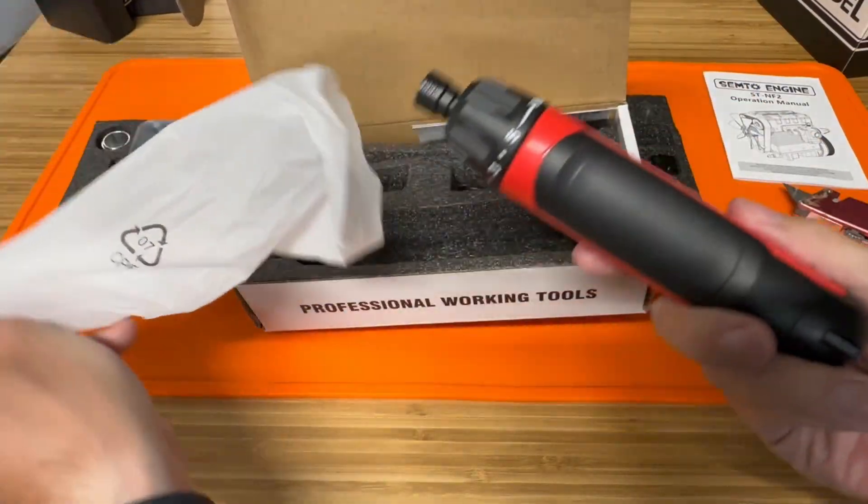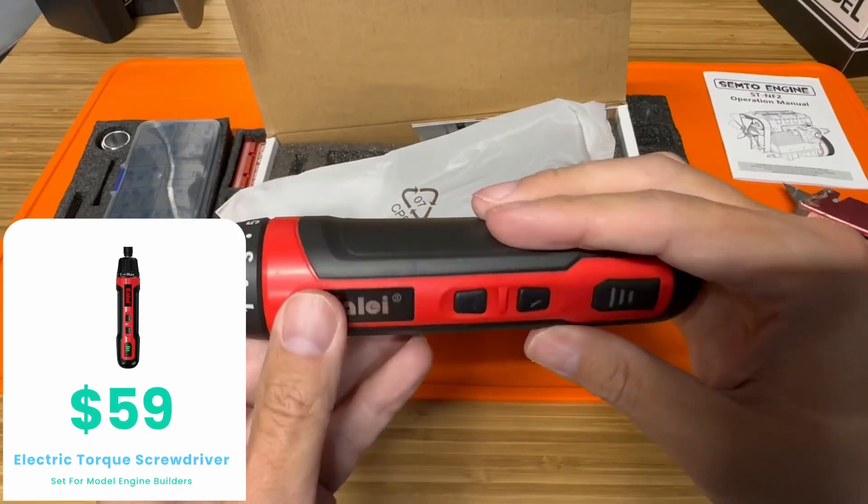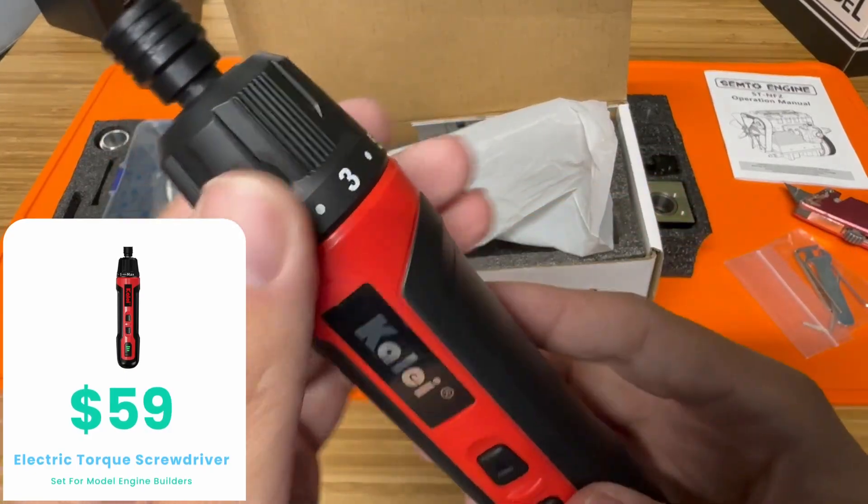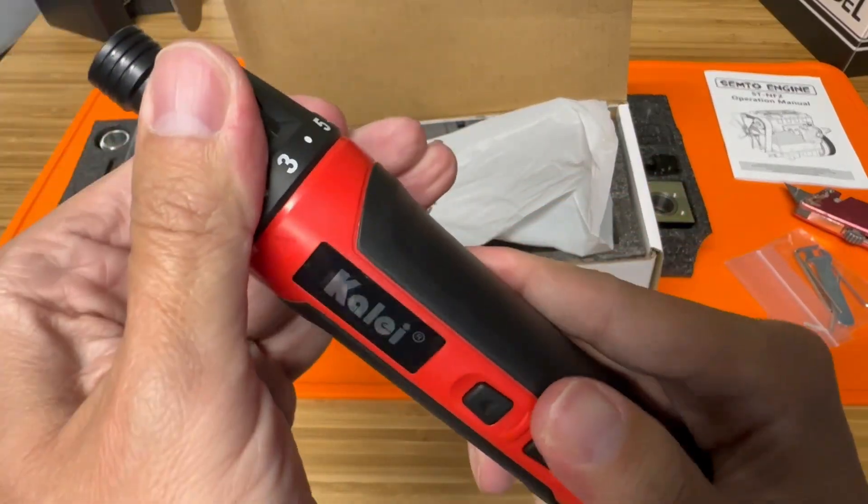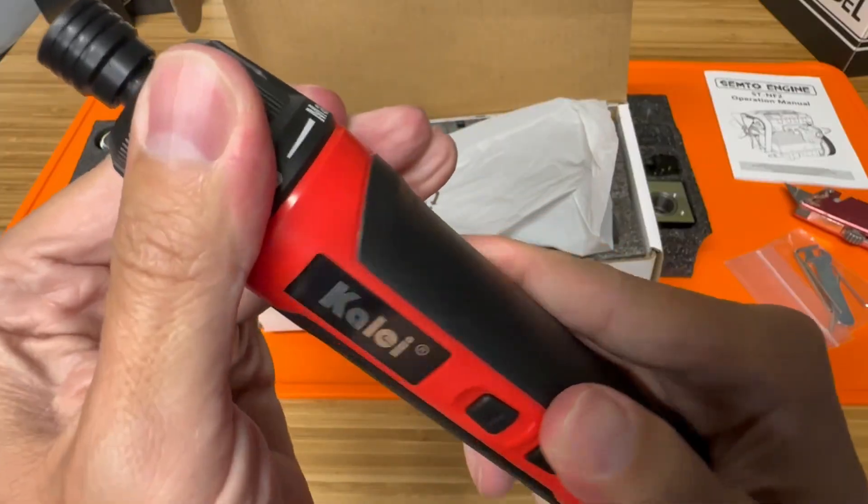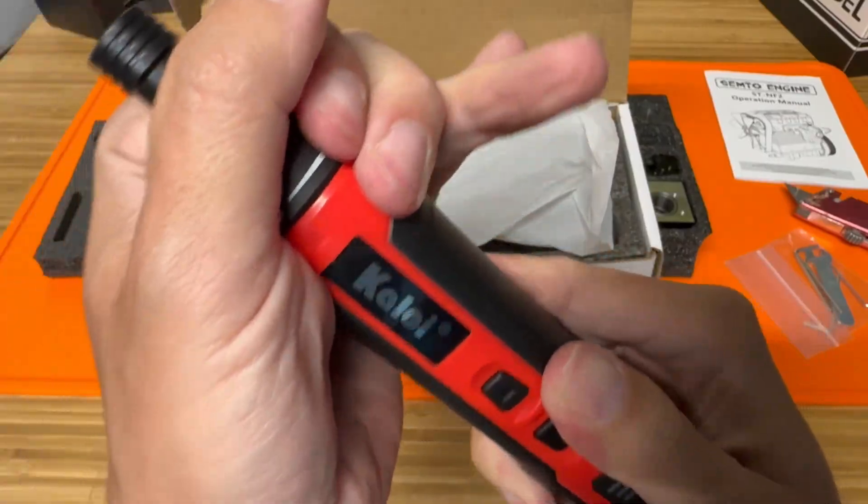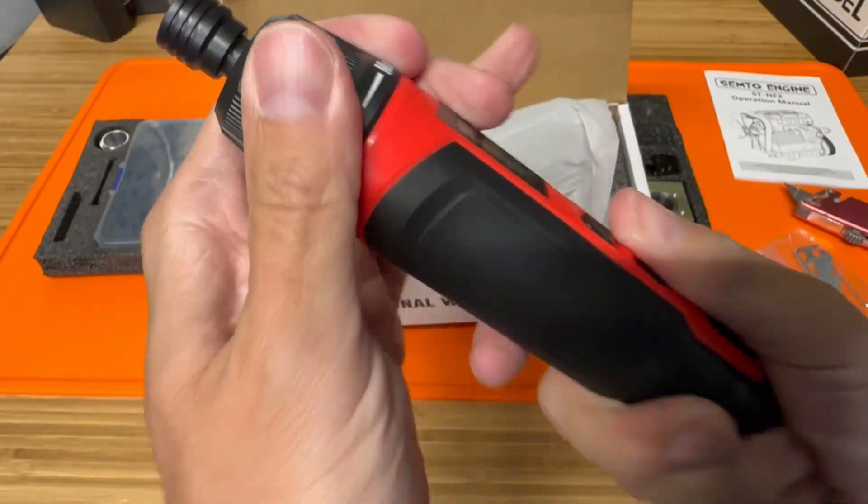Now this torque driver is available also from Sterling Kits and basically everything is anywhere from 1.5 to 3.5 torque specs. So this comes in real handy to make quick work of assembling the engine.